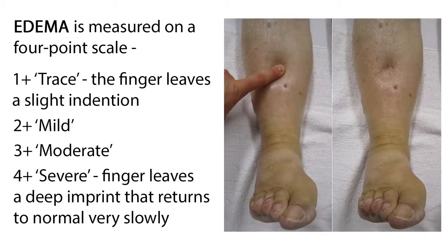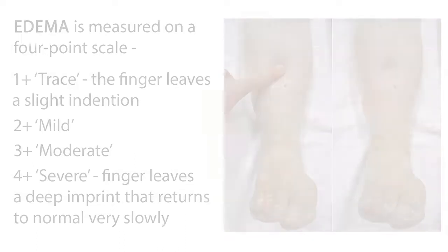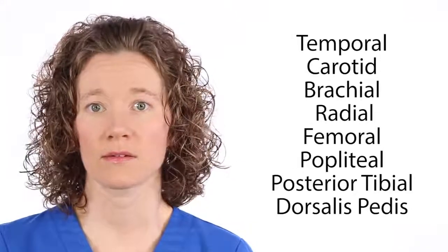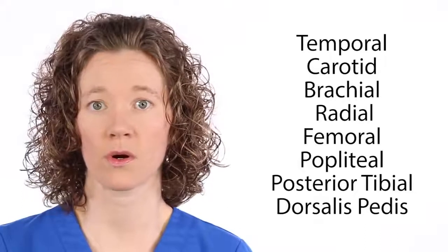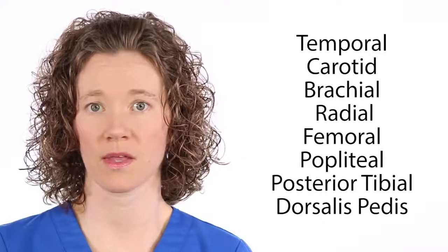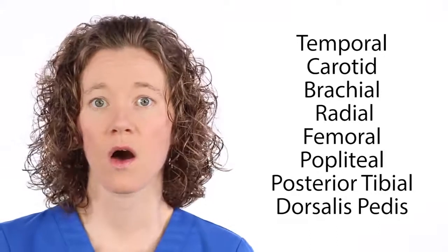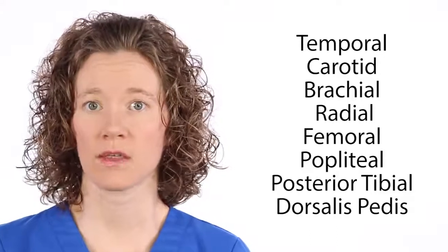Edema is measured on a four-point scale, from 1-plus if the finger leaves a slight indentation, to 4-plus if the finger leaves a deep imprint that returns to normal very slowly. Check capillary refill by pressing the nail beds on fingers and toes — refill time should be three seconds or less. Use the pads of your index and middle fingers to palpate all pulses, including temporal, carotid, brachial, radial, femoral, popliteal, posterior tibial, and dorsalis pedis. All pulses should be equal in strength and regular in rhythm.